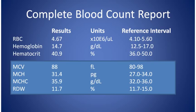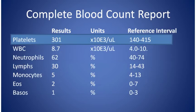The MCV, MCH, MCHC, and RDW are measurements of individual red blood cells, and these measurements can go a long way towards determining the cause of an anemia.